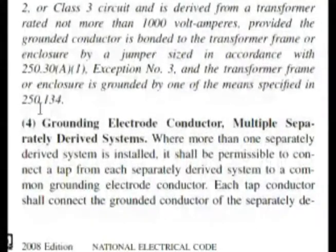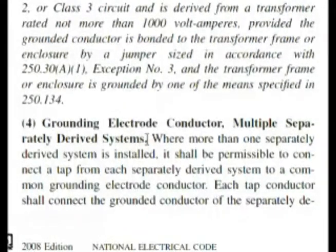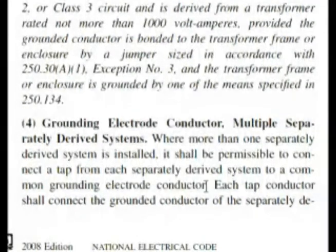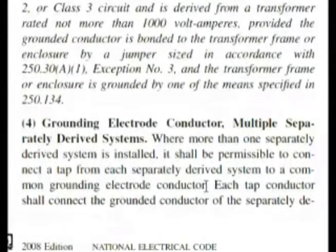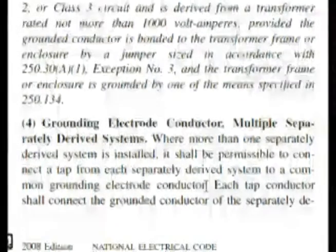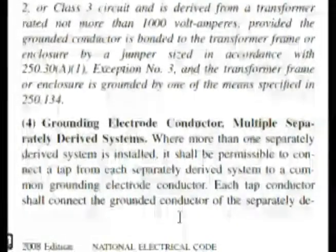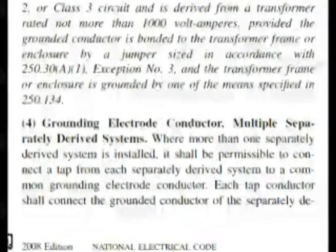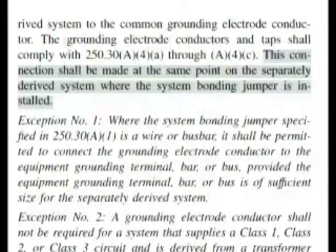Let's look at separately derived systems — it's 250.30(A)(4). Here we are in the code at 250.30(A)(4): Grounding electrode conductor, multiple separately derived systems. It says where more than one separately derived system is installed, it is permissible to connect the tap from each separately derived system to a common grounding electrode conductor. This is basically telling us it's permissible to do it, but our question is asking us what or how we should do it. We have to go to the top of the column on the same page and follow along in your book.